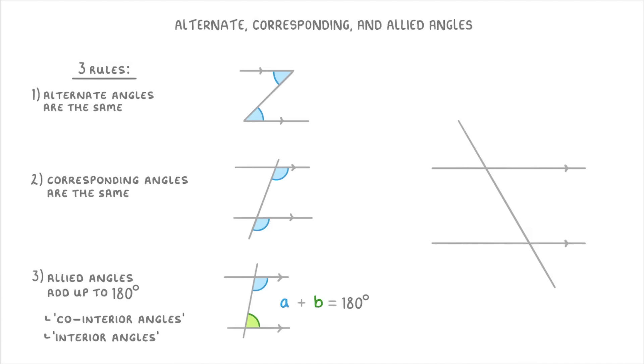If we look on our main diagram, we can see one of these C shapes here. So the allied angles would be this 60 degrees and this 120 degrees, which indeed do add together to make 180. One thing to point out with all of these rules is that you'll sometimes see them in other orientations, like flipped around, in which case they'll be harder to spot. But as long as they have the same combination of two parallel lines and one transversal, then the rules are going to be the same.